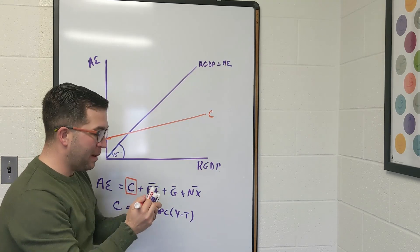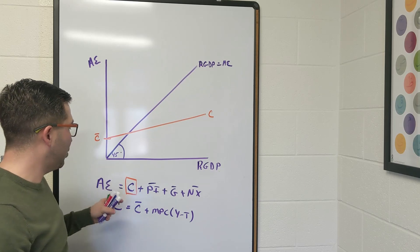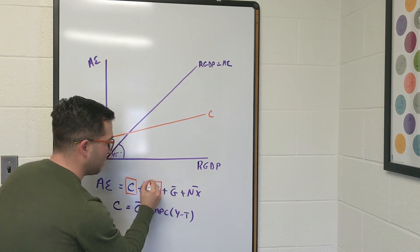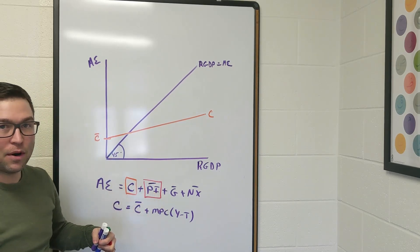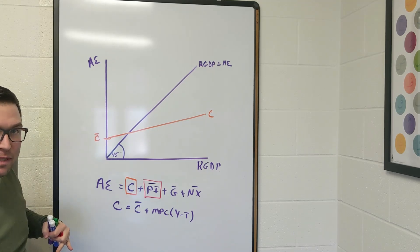But aggregate expenditure isn't just the consumption function. Aggregate expenditure is the consumption function plus other stuff. So let's take planned investment. Well, if I have planned investment here, it's just a number. So I just take this consumption and I add planned investment to it.